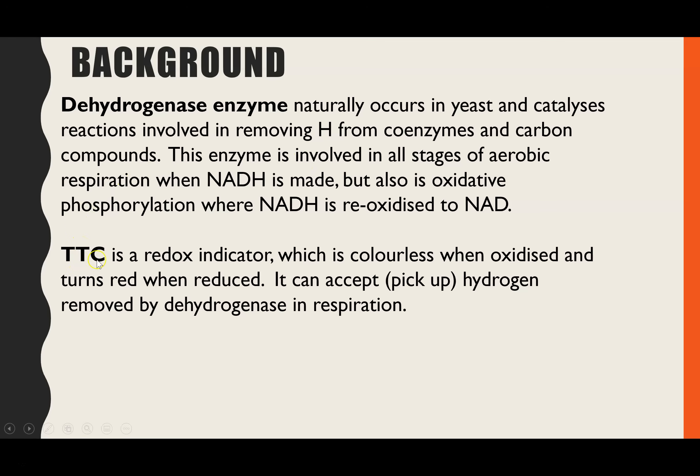we're going to add an artificial hydrogen acceptor, and that is TTC. This is a redox indicator - when it is oxidised, TTC is colourless. When it picks up the hydrogens and becomes reduced, it starts to form a red precipitate. So we'll be able to see a colour change when all of this is happening.